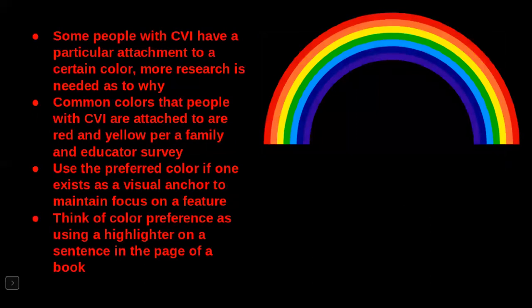Some people with CVI have a particular attachment to a certain color. More research is needed as to why this is, and common colors that people with CVI are attached to at a high percentage are red or yellow. We can use this preferred color to our advantage when working with our children and students by helping to maintain focus on a feature by using their color as a visual anchor.